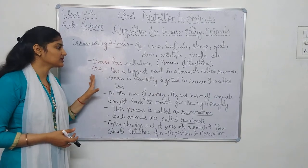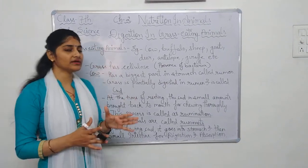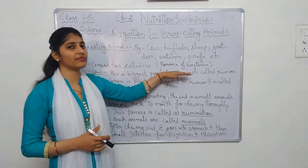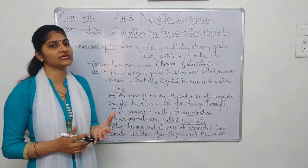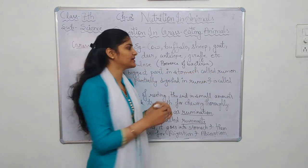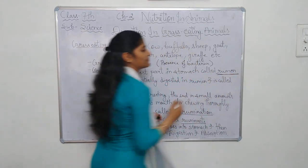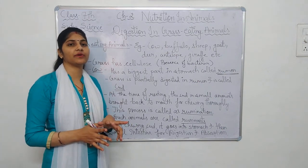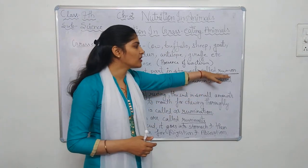Let us see the example of a cow for understanding digestion in these animals. In animals like cow, the first compartment in their stomach is the biggest one, and we call it the rumen. So the first biggest compartment of the cow's stomach is called the rumen.